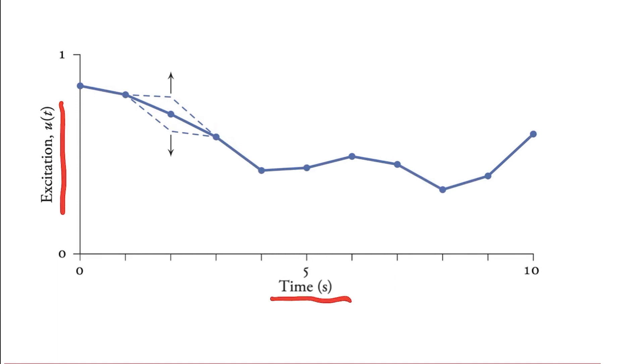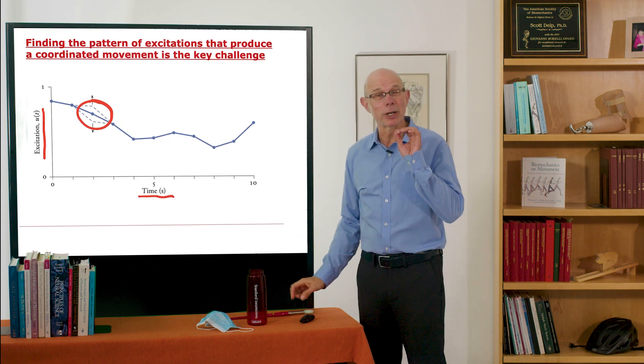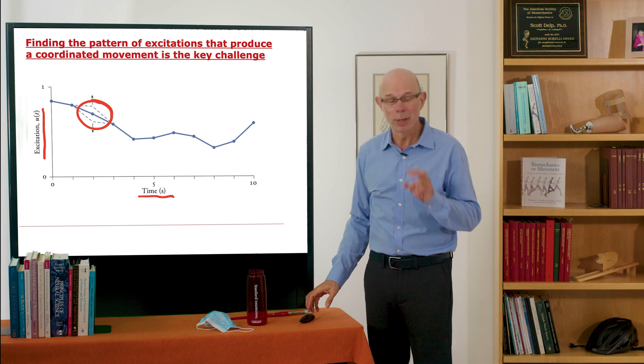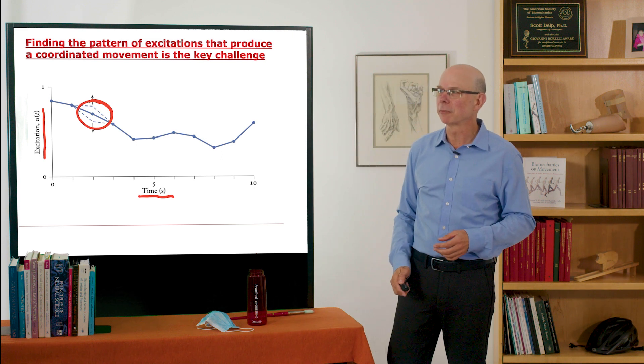Computationally, you can think of trying to solve this problem. What I'm plotting here is excitation versus time. For every muscle, we want to know what the excitation of the muscle is at every point in time. So let's say we have just one muscle, it's a very simple model, a very simple simulation. What we do is we'll use optimization to adjust the excitation patterns to see if it produces a coordinated movement. That's quite a challenging computational problem that we'll get into later, but that is the crux of creating a muscle driven simulation.